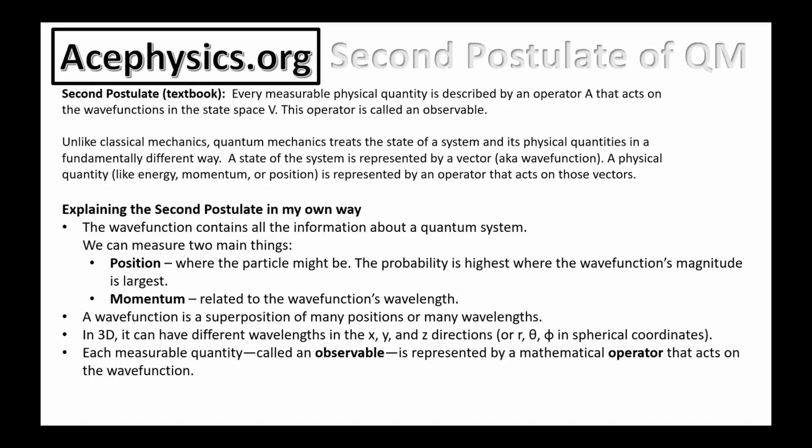A wave function is a superposition of many positions or many wavelengths. This is talking about the Fourier series, if you're familiar with that mathematics. In three dimensions, a wave can have different wavelengths in the x, y, and z direction, or r, theta, and phi if you're using spherical coordinates. Each measurable quantity, called an observable, is represented by a mathematical operator that acts on the wave function. So there are mathematical operations, like a derivative, that you can do on a wave function. And mathematically, that will tell you the wavelength.